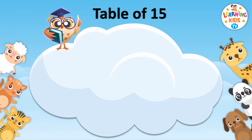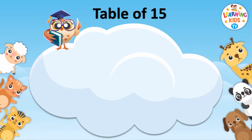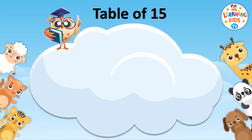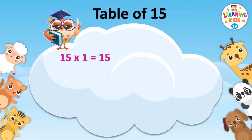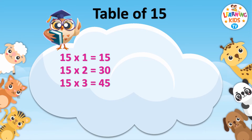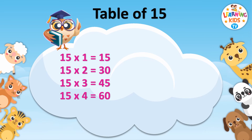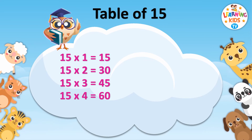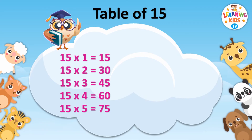Table of Fifteen. Fifteen ones are fifteen. Fifteen twos are thirty. Fifteen threes are forty-five. Fifteen fours are sixty. Fifteen fives are seventy-five.